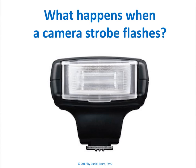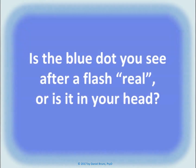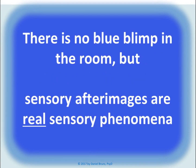I'm sure you've had your picture taken before. What happens when a camera strobe goes off in your face? You see a blue dot. Now, is that blue dot you see after a flash real, or is it in your head? Obviously there's no blue blimp floating around the room, but sensory afterimages are real sensory phenomena.